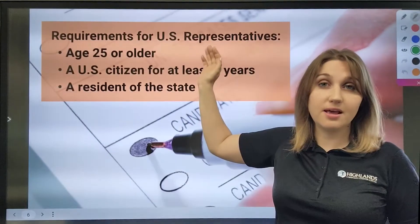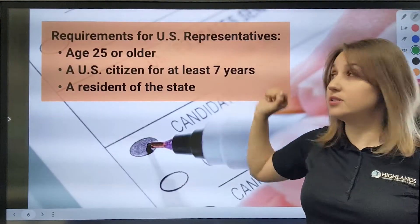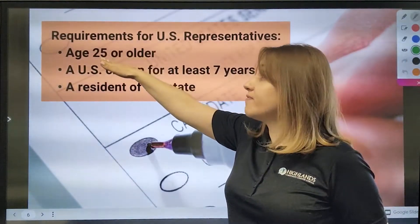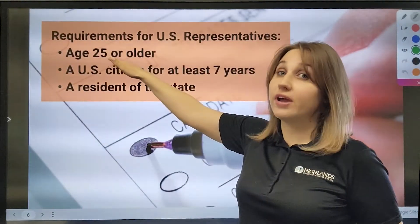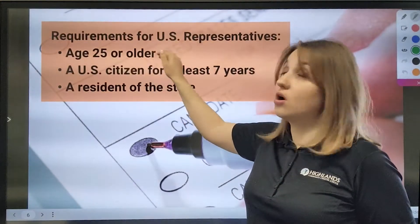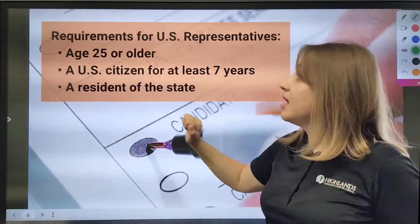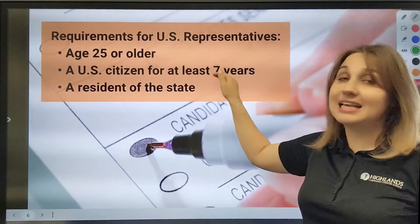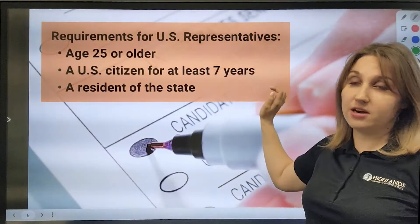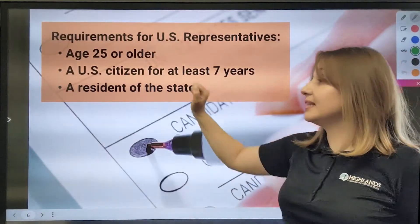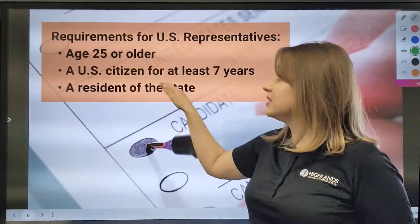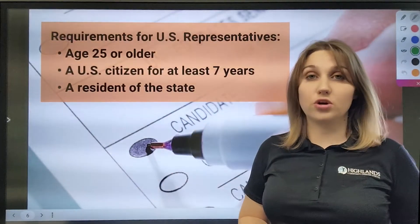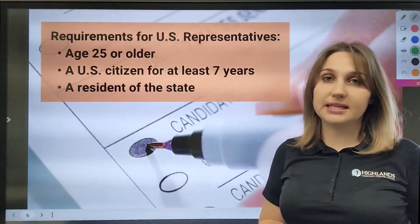Now let's briefly look at the requirements for US representatives. That person must be 25 years of age or older, a US citizen for at least seven years, and a resident of the state that he or she represents.